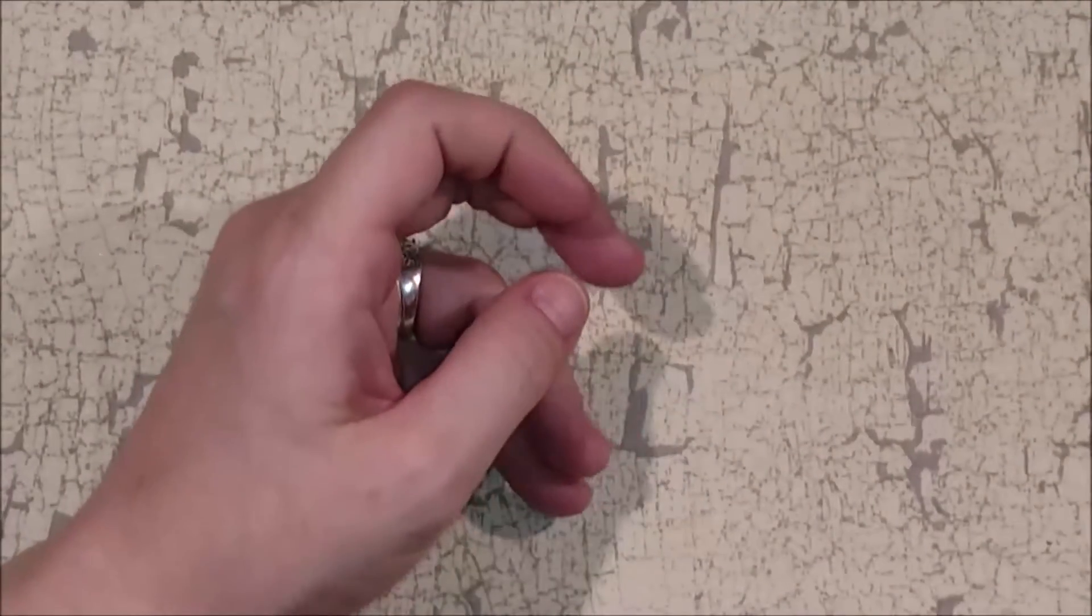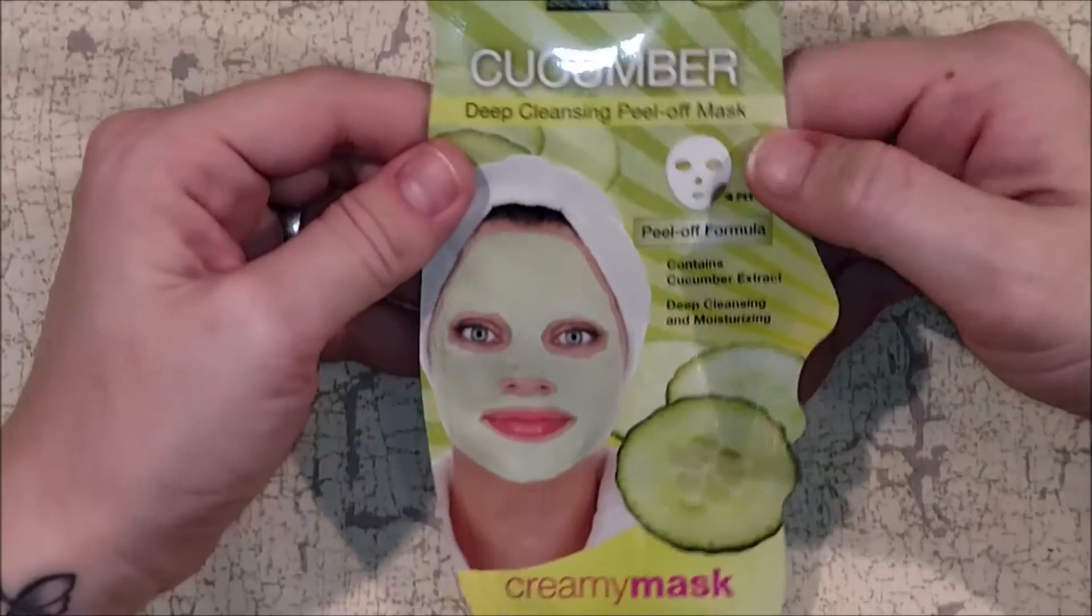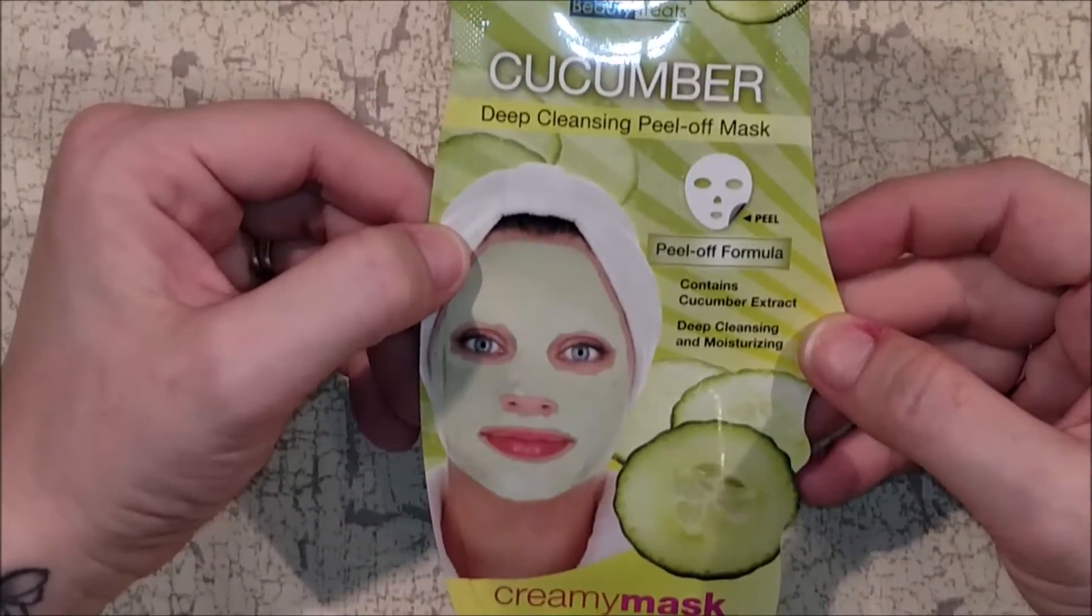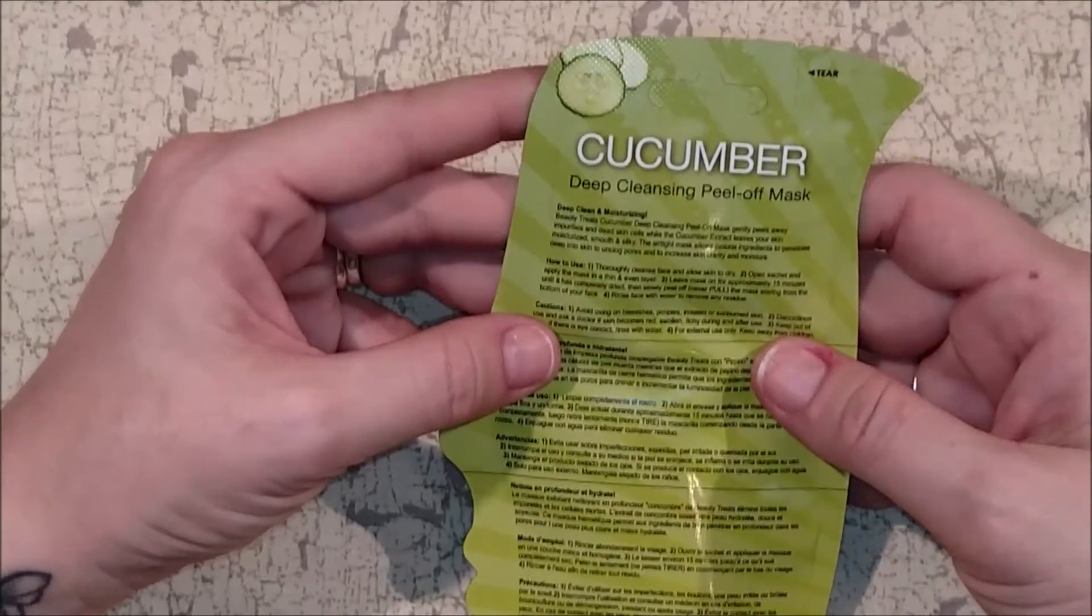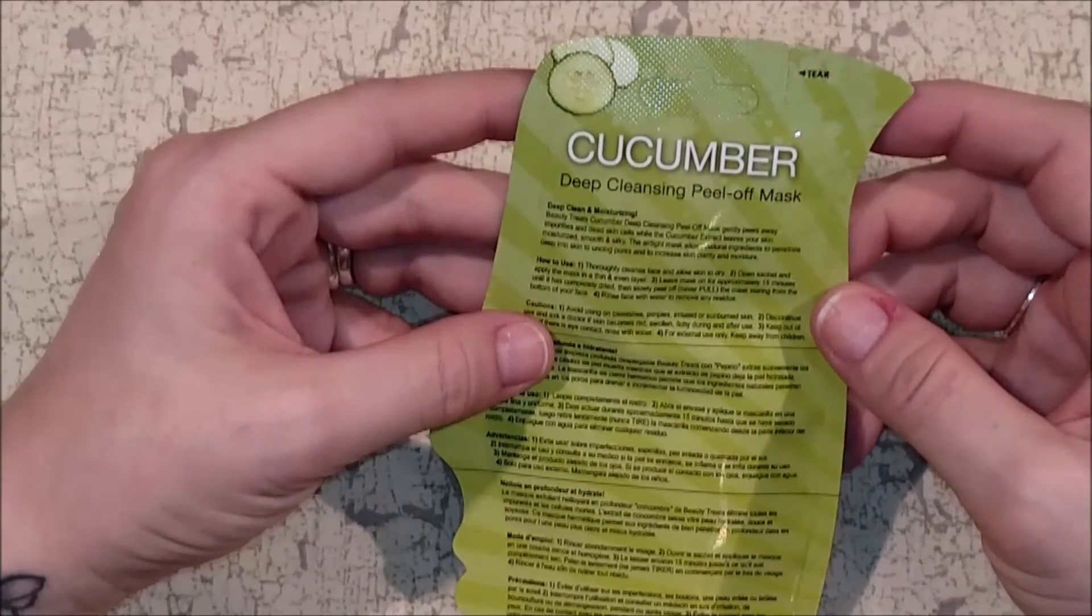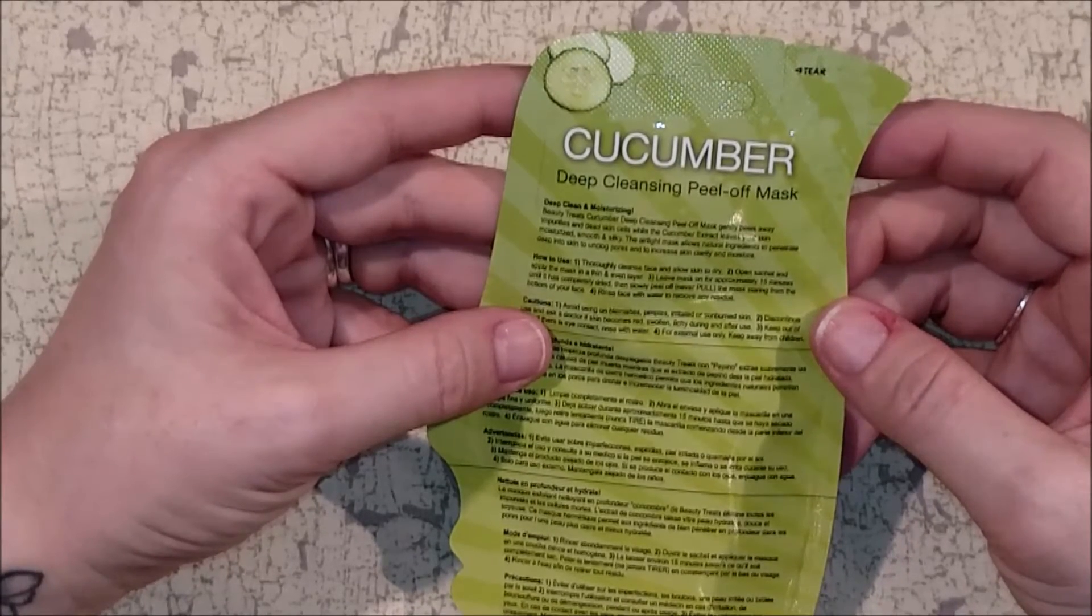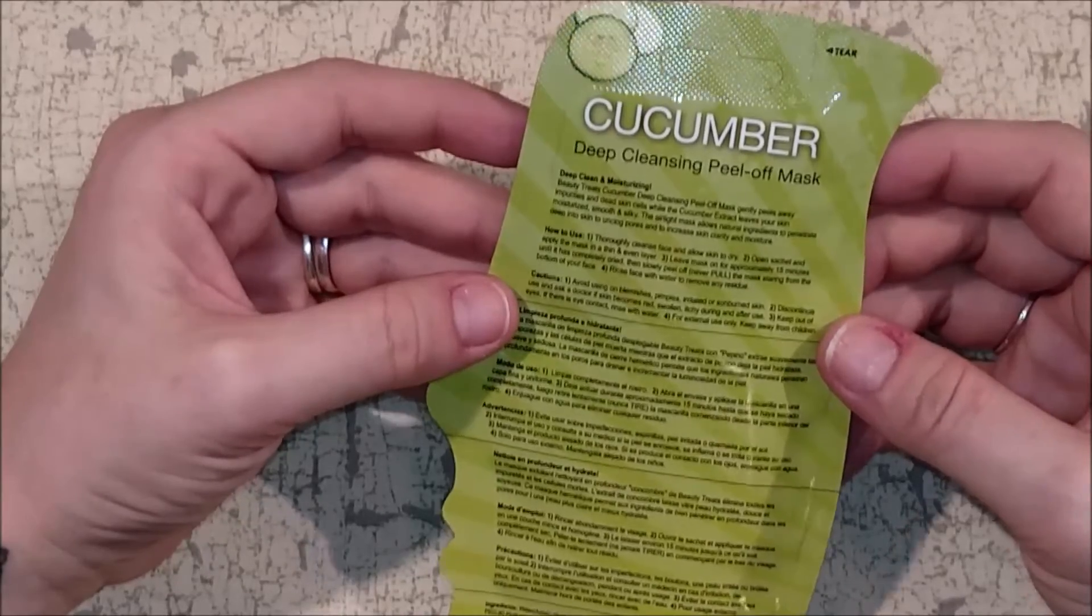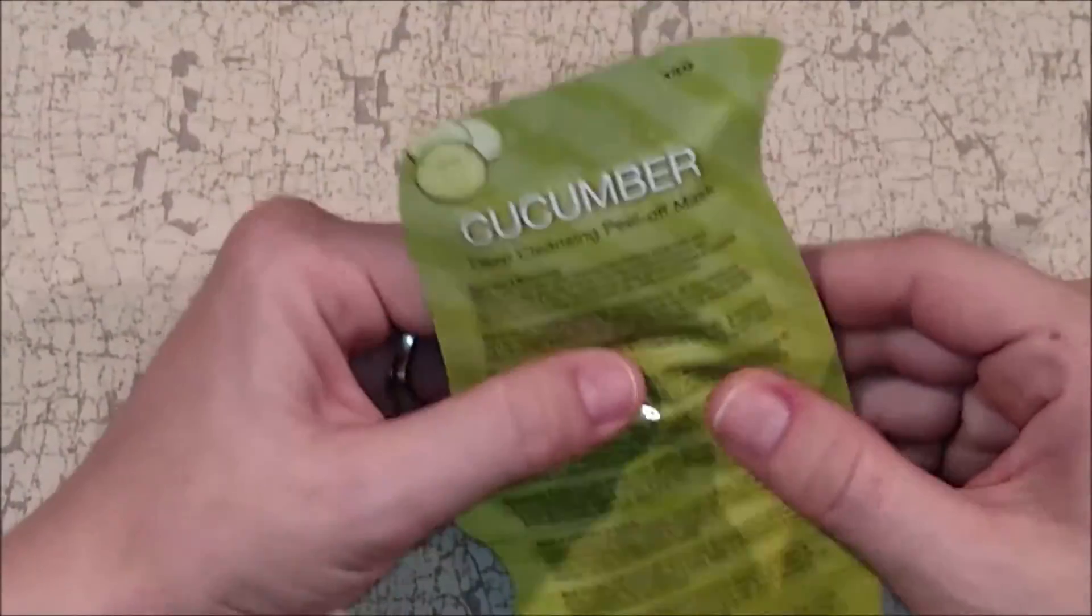And the last thing that I got from Daiso is this. I've been looking for like some peel off formula masks. And this is a deep cleansing peel off mask. Because I've told you guys a few times that my skin has been very angry at me lately. And this is a cucumber. So, it is a deep cleansing and moisturizing cucumber extract mask. And how this works is you thoroughly cleanse your face. Allow the skin to dry. Open the sachet. And apply mask in a thin and even layer. Leave mask on for approximately 15 minutes until it's completely dry. Then slowly peel off. Never pull the mask. It's supposed to be starting from the bottom of your face. Rinse face with water to remove any residue. So, that is like kind of gooshy in there. Which is cool. So, that was it guys.